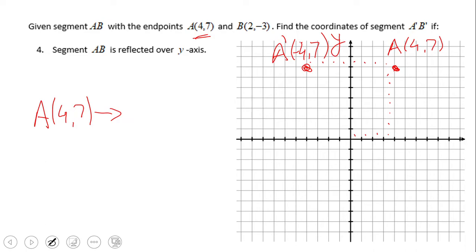And basically now we can try to get a rule: four and seven under this reflection becomes negative four and positive seven. So the rule is (x, y) becomes negative x and positive y.